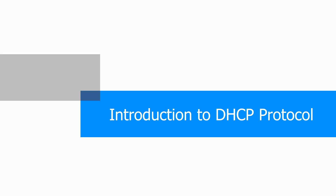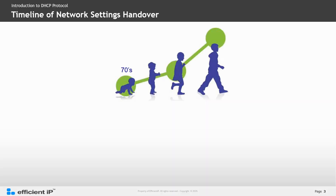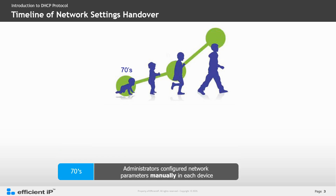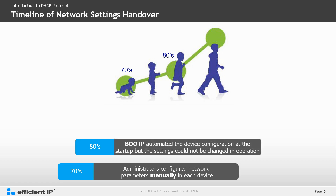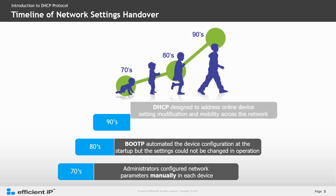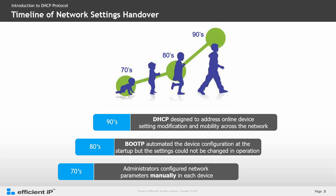Let's start with an introduction to the DHCP protocol. Over time, network device configuration has evolved. In the 1970s, administrators configured network parameters manually on each device. By the 1980s, BOOTP was introduced, automating device configuration, but it was limited because settings could not be changed once in operation. In the 1990s, DHCP was designed, based on the BOOTP protocol, to address online device settings, modifications, and mobility across networks.